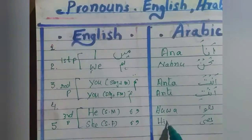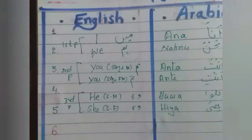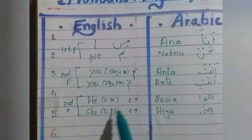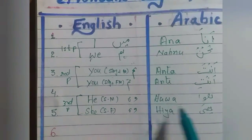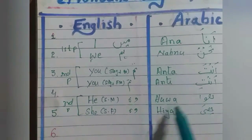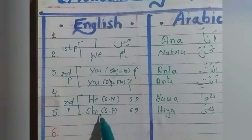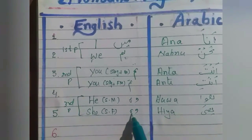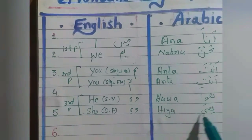Ya means female. Wo — lad ke liye, and he, male singular, ho, marid, huwa. She is used for female, monas, hiya.